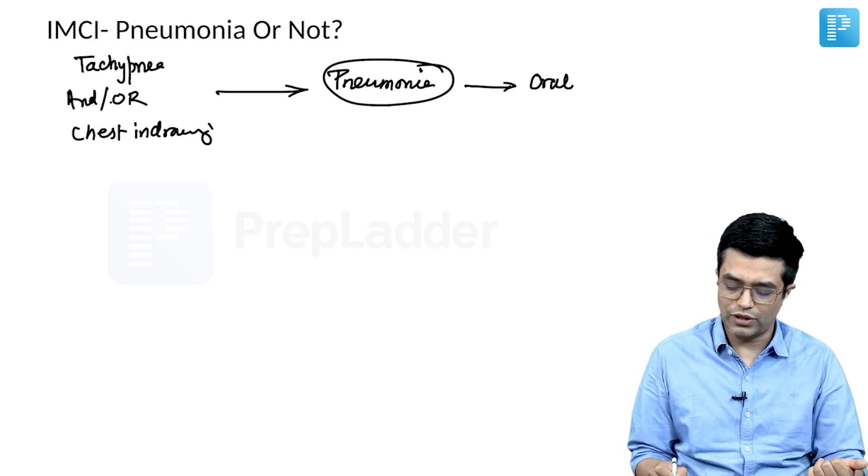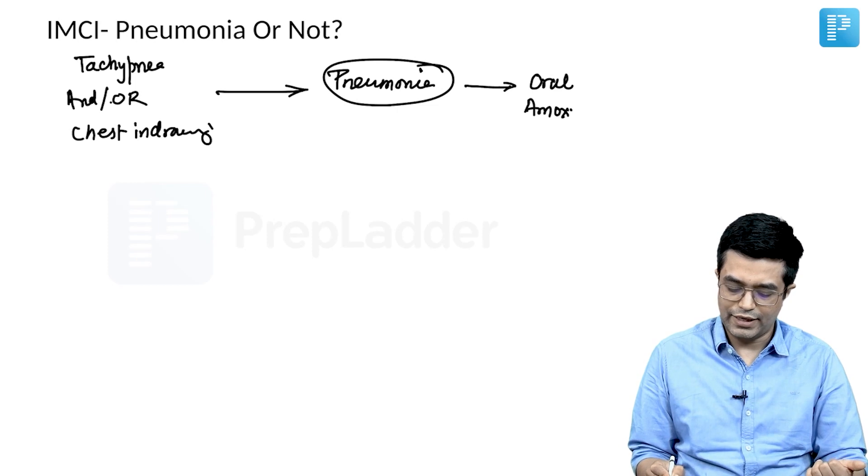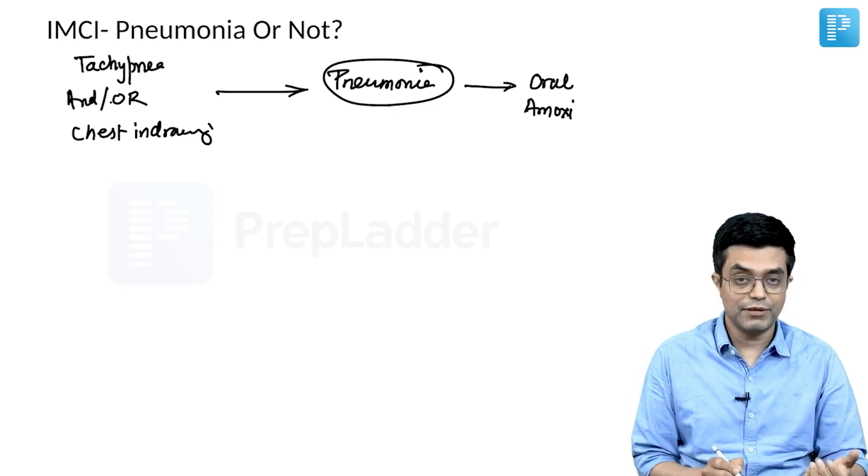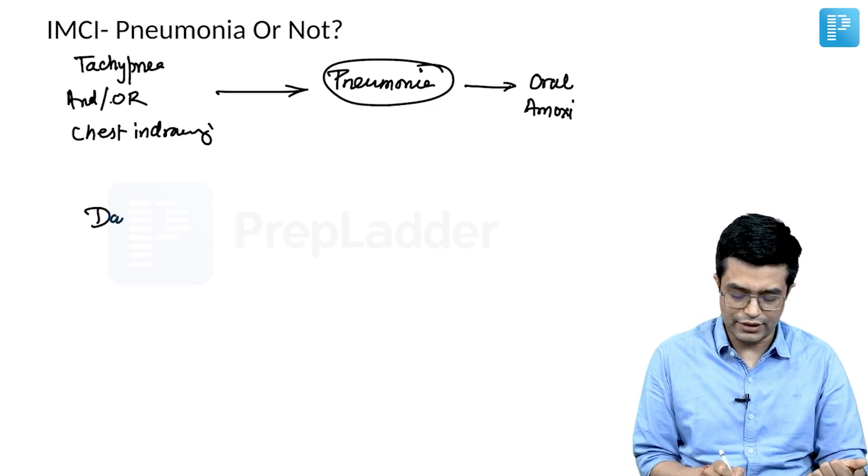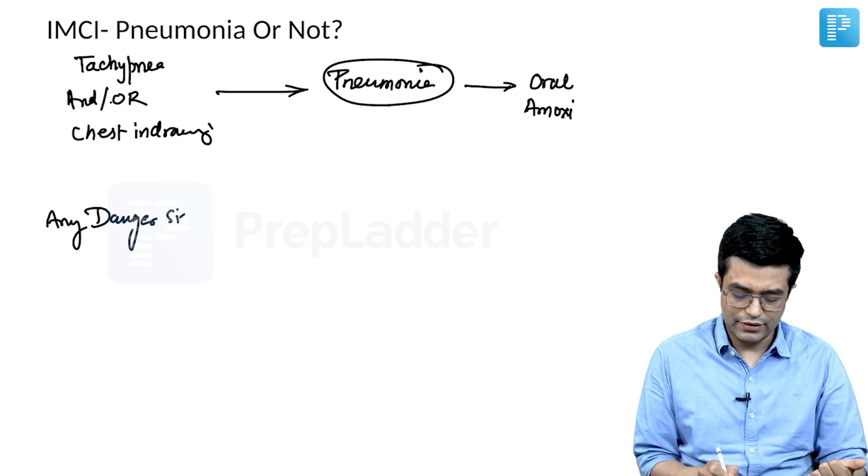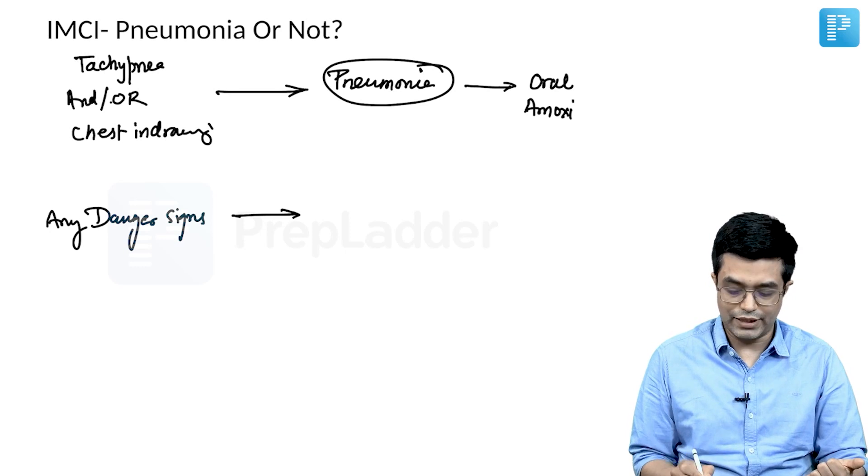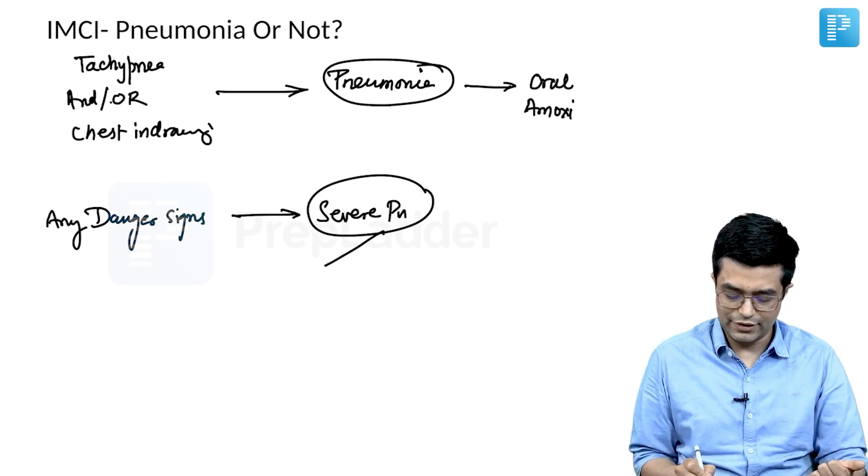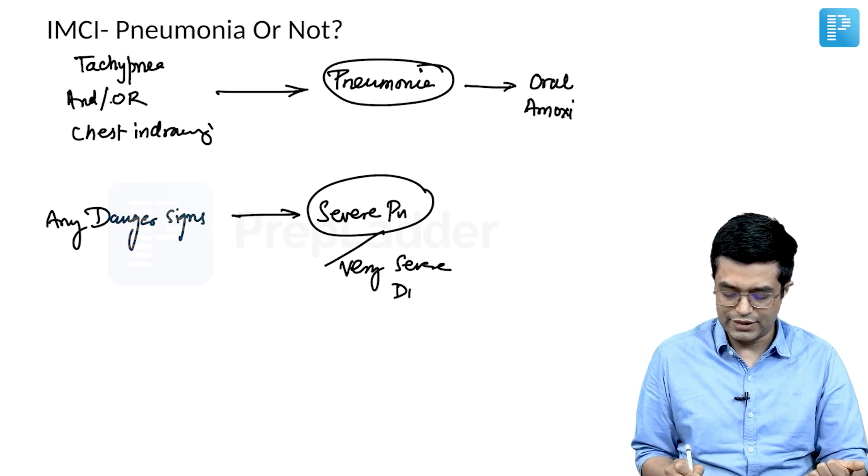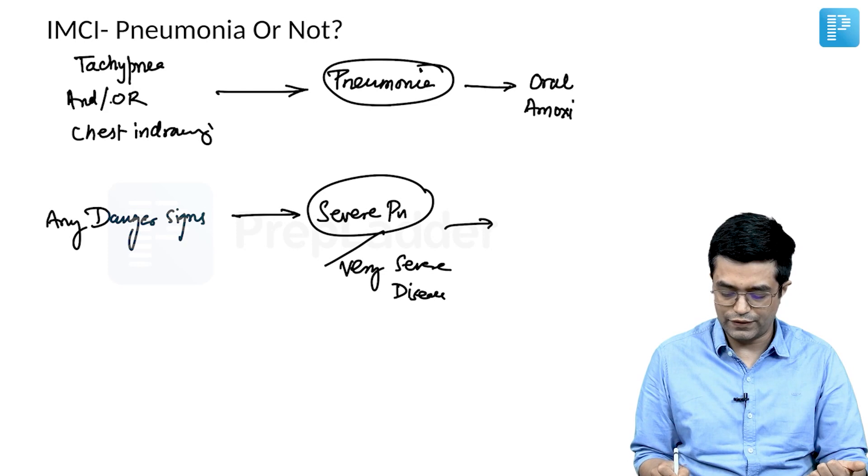In case the child is having any respiratory feature along with danger signs, any danger signs are present, then the child will be labeled as severe pneumonia. Severe pneumonia is also called very severe disease. There is no such entity as very severe pneumonia. And these are the children who will require parenteral antibiotics.